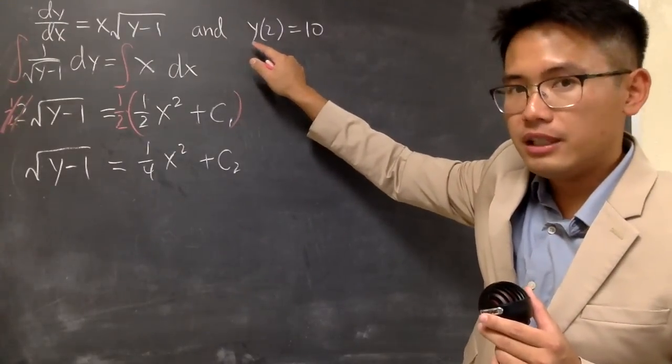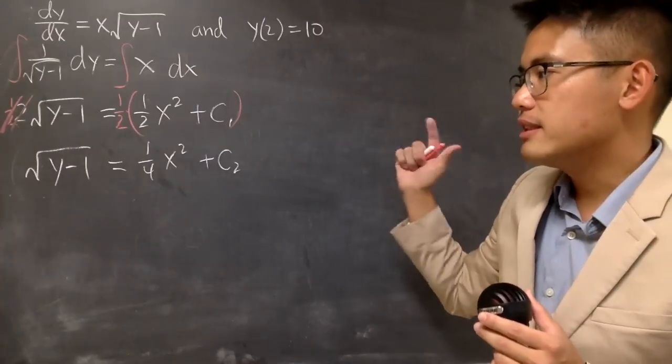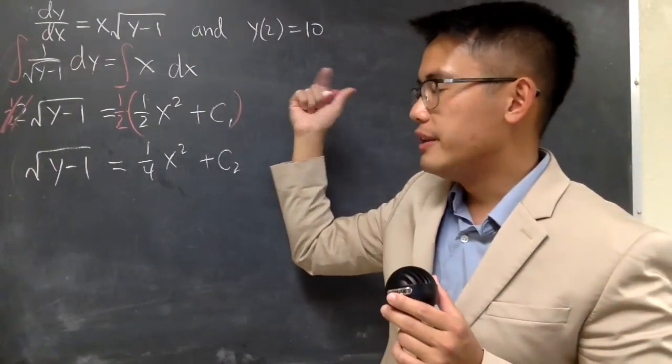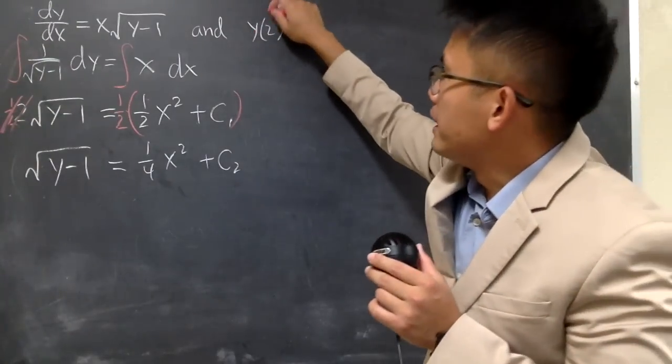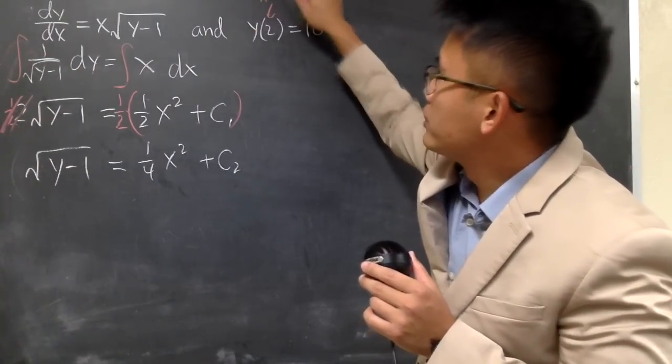Here we do have this initial condition and I think it's a good time for me to plug in the x and the y value right here so I can solve for the constant. This right here means x is equal to 2.